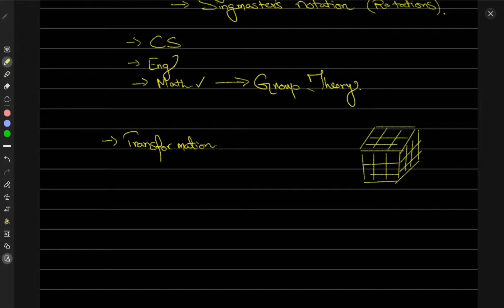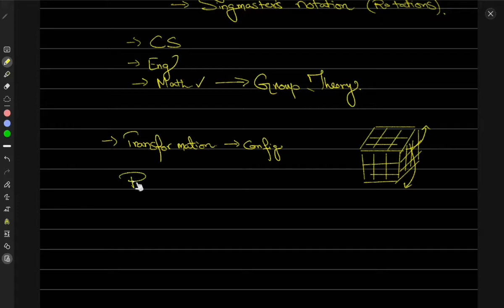You perform transformations by rotating — you can rotate these faces like this, and so on. These different transformations set up different configurations of the cube, and together these transformations and configurations of this particular cube are going to form a subgroup — the subgroup of a group called the permutation group.